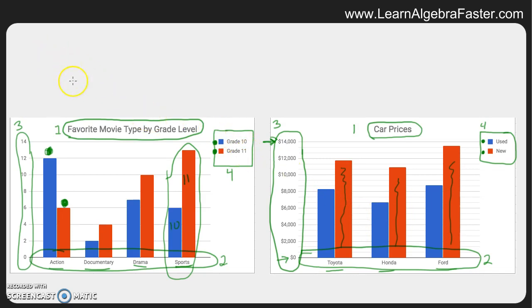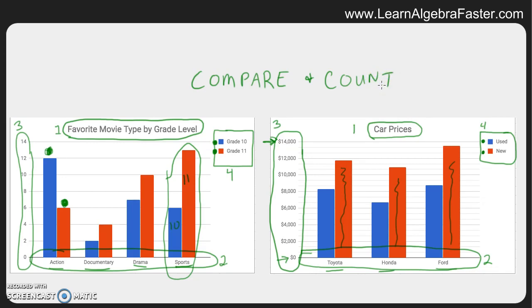So the four key things we look for are: the title, the horizontal axis (always pay attention to the units), the vertical axis (also pay attention to units), and the key. Above everything, a bar graph is used to compare and count — basically every bar graph can compare multiple things and count quantities. A bar graph is versatile because you can use lots of different units and compare lots of different things.